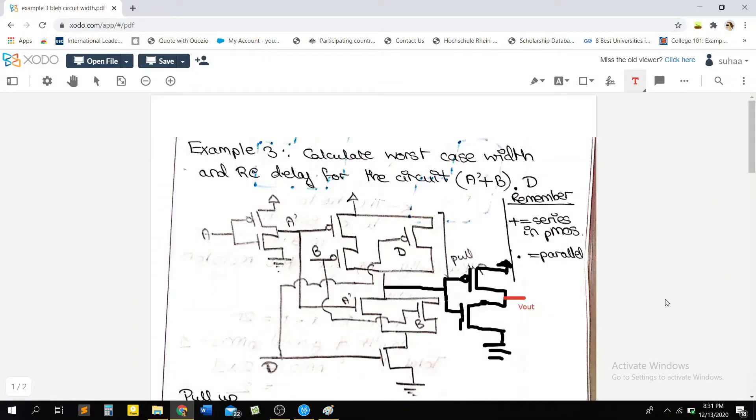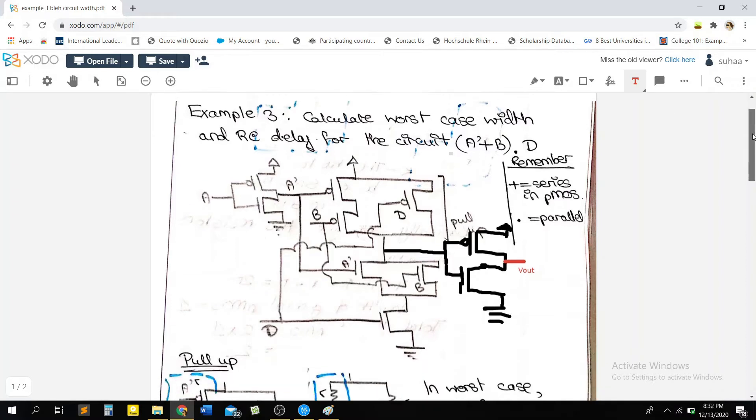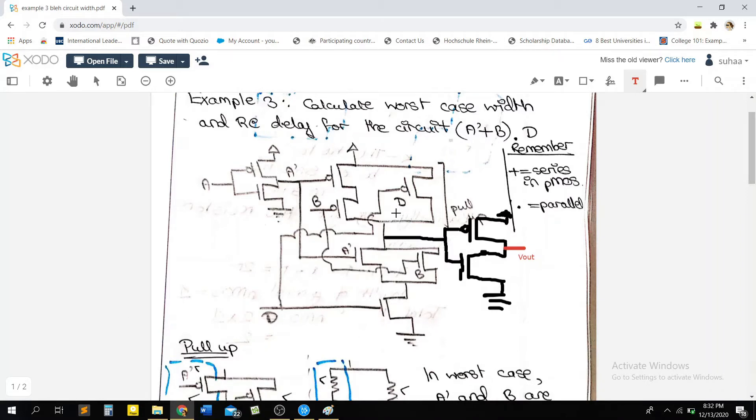Hello guys, welcome back to another video of our VLSI series. So in this example, we are going to be calculating the worst case width and the RC delay for the circuit represented by this boolean expression here. So A' plus B dot D, and that's our boolean expression. And I've already constructed the circuit here, the CMOS circuit.